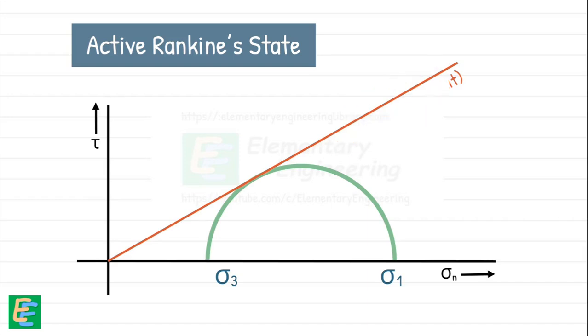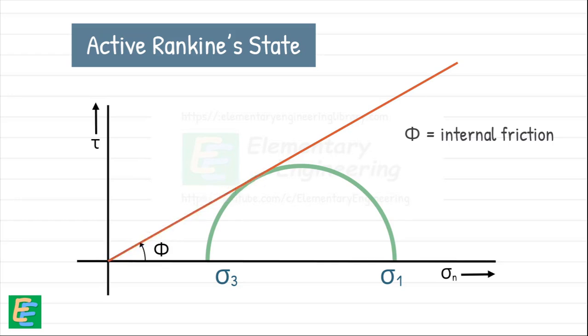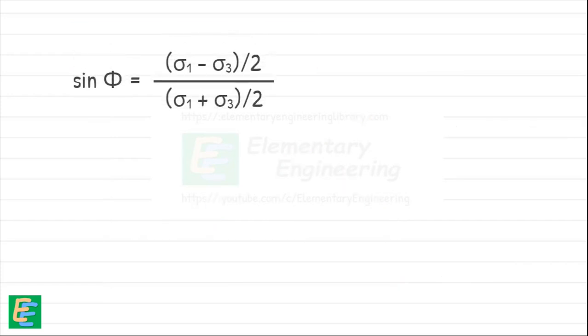We know that the angle of failure envelope is written as phi. This represents the internal friction between the soil particles. Now, if we look at the triangle formed by failure envelope, this stress axis and radius of Mohr circle, we can write sin phi as this. Solving for sigma 3, we get this.